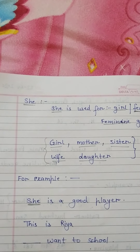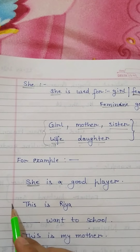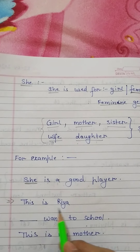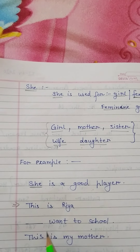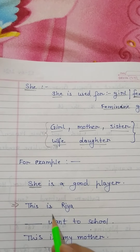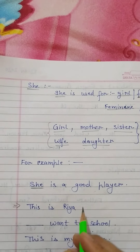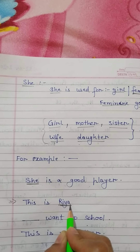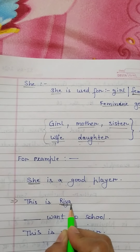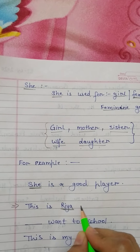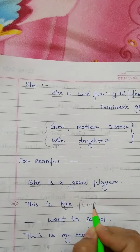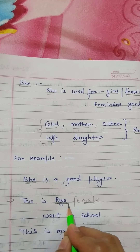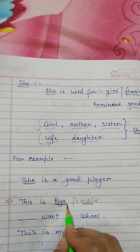See the next example. This is Ria. Now we see whether the name Ria is a male person or a female person. Ria is a female person. Then we always use she for Ria.